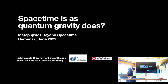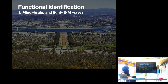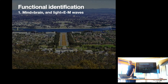Essentially the gist: there are two things I want to do in the talk. The first is to compare functional identification in quantum gravity — in the emergence of space-time — with functional identifications in more standard cases, say mind-brain identifications, or the example Lewis gives in the same paper of light and electromagnetic waves. I'm going to focus on the light-EM case.